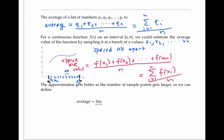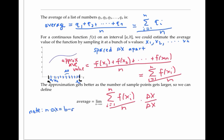So we could define the average as the limit as n goes to infinity of the sample average. I'd like to make this look more like a Riemann sum, so I need to get delta x in there — I'm going to multiply the top and the bottom by delta x.